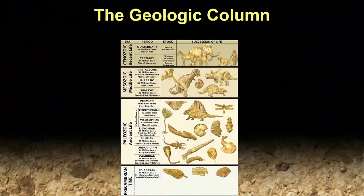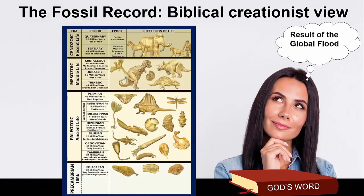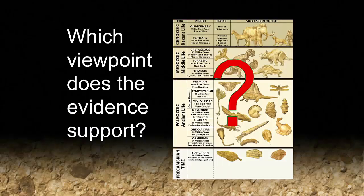The fossils and the layers of the earth are laid down in what scientists call a geologic column. There are different opinions about this column. Evolutionists believe that this column represents billions of years of evolution, animals evolving from very simple creatures to very complex. As a biblical creationist, I believe that the vast majority of fossils were created by the global flood described in the book of Genesis. So which viewpoint does the evidence support?